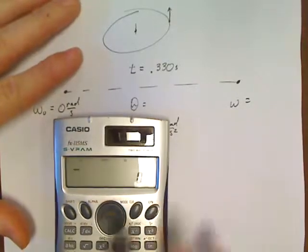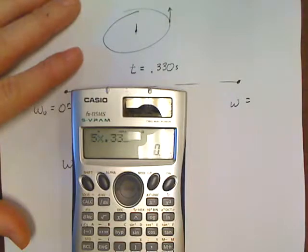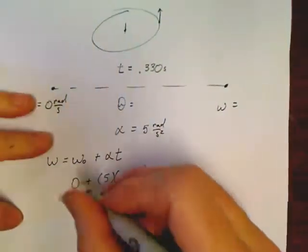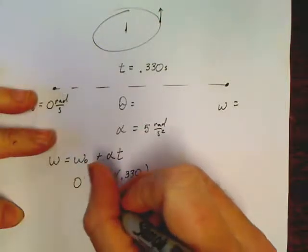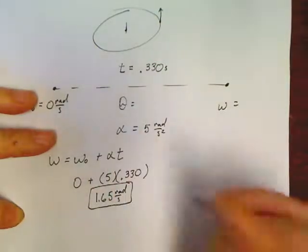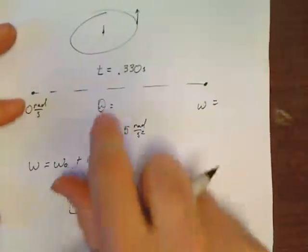And now we can go back and solve. 5 times 0.330, that's 1.65. So my velocity would be 1.65 rads per second.